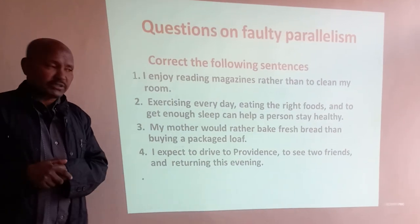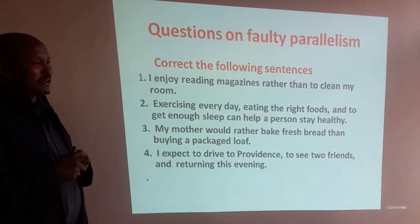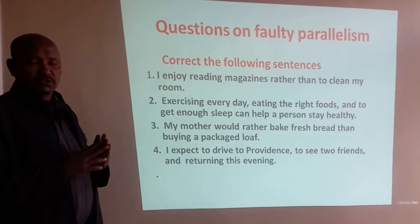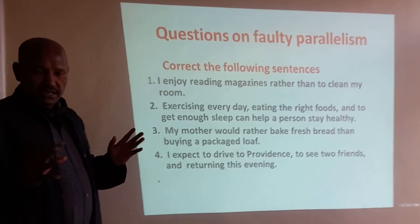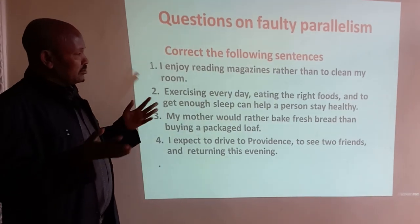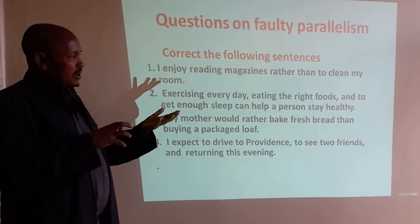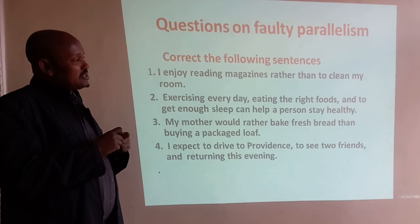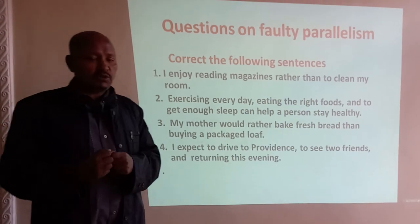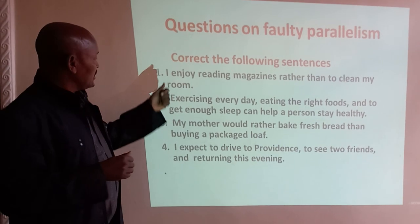Now there are questions on faulty parallelism: correct the following sentences. The faulty parallelism sentences do not give complete meaning, so you need to make them correct — that is self-parallelism correction. As I told you, find the conjunction first. If there is no conjunction, identify the two different words or phrases that have different forms, and then correct them. Keep this strategy in mind to write meaningful, correct sentences.